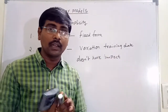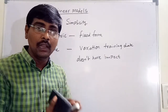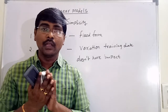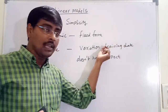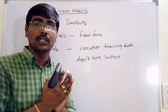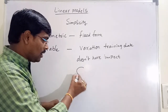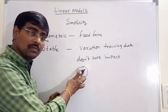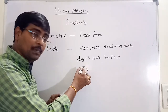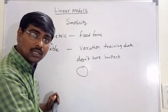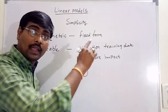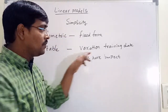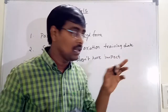If you perform any modifications on the training data, the impact on the learning model is very low. But consider the tree model — for example, the decision tree. If you modify anything in the training data, the complete structure will change. For example, if you are making a split at the root, based on that split the entire tree changes. If the split is based on length, the tree is one format; if the split is based on another feature like height, the entire tree structure changes. But in linear models, it has a fixed form, so any variations on the training data do not have any impact on the learning model.